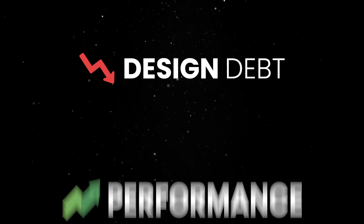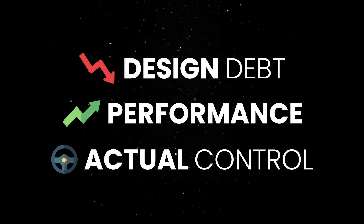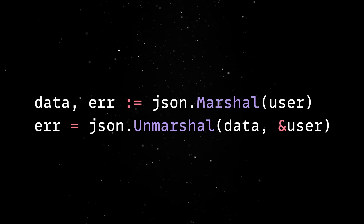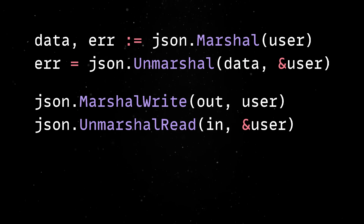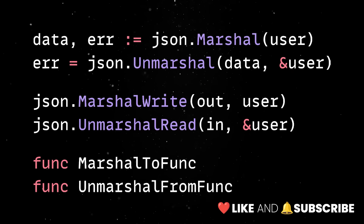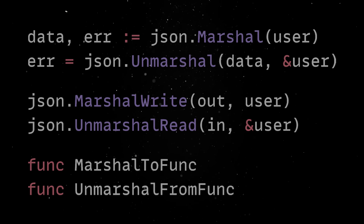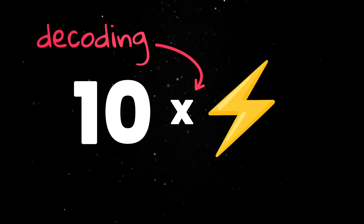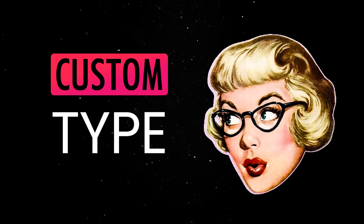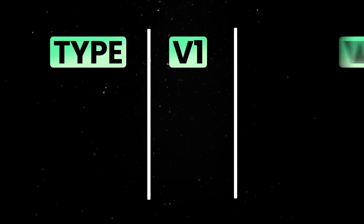Together, they fix years of design debt, bring massive performance improvements, and give you actual control over how your JSON is handled. You still get your well-known Marshal and Unmarshal, but now you also get a lot more utility functions, streaming decoders and composable options. You get proper formatting tools, case-insensitive matching, better tag semantics, and decoding up to 10 times faster in some real-world cases. And what's even more exciting is that you're not forced to wrap everything in a custom type anymore just to encode specific types or handle unknown fields gracefully.